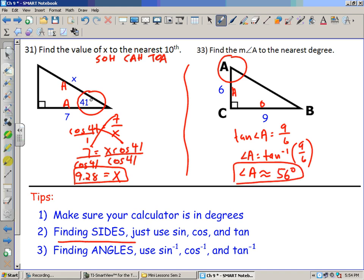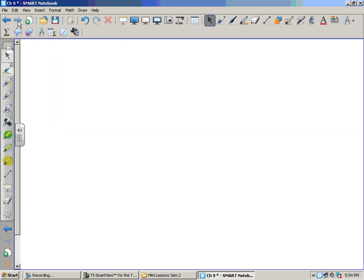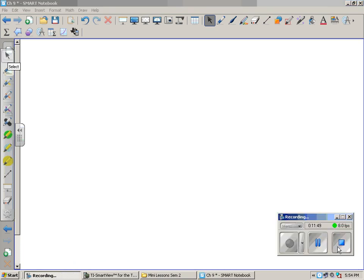Again, when you're looking for sides, just use sine, cosine, tan. When you're looking for angles, use sine inverse, cosine inverse, and tan inverse. I hope this was helpful. If you had any questions or I went too fast, be sure to ask your teacher, or go back and pause and try to figure these things out.